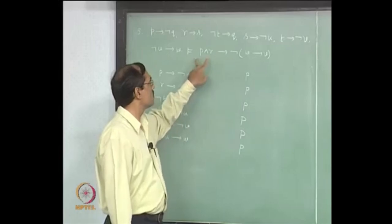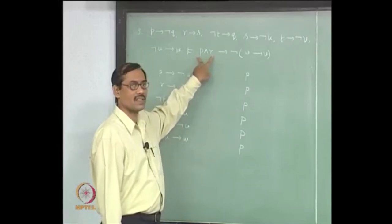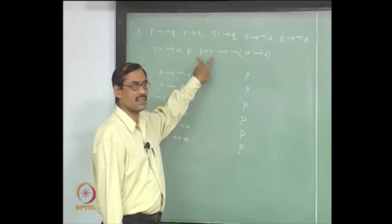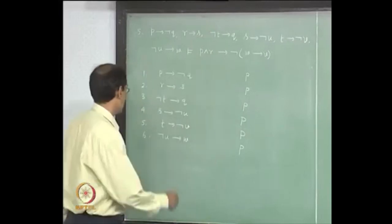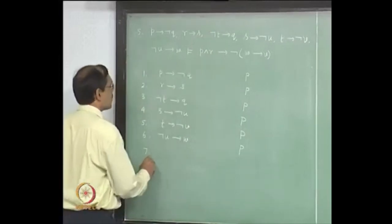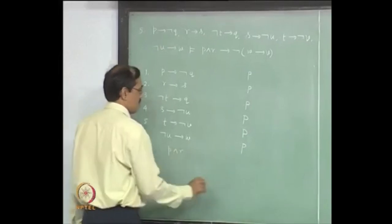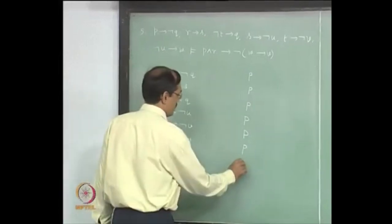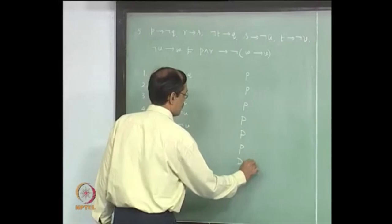So that means we take its antecedent, which is p and r, as an extra hypothesis or extra premise and we document it as deduction theorem begins. We start with the seventh line as p and r, which we will be writing as deduction theorem begins.